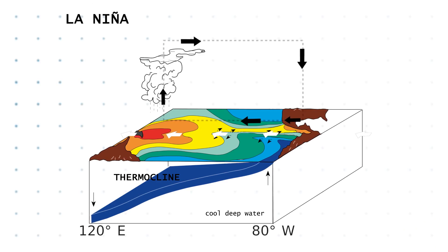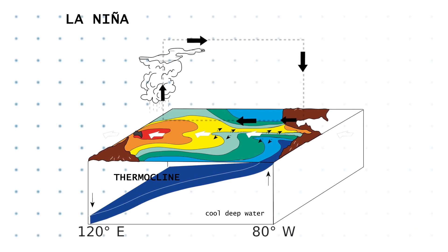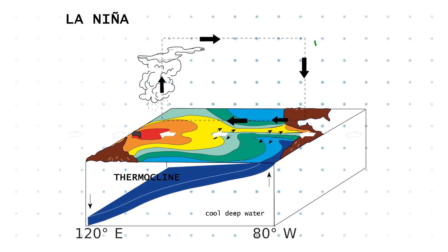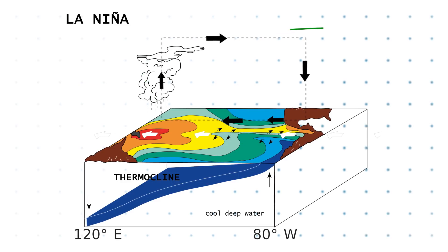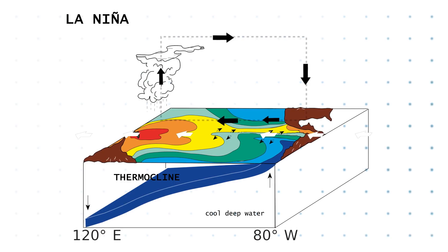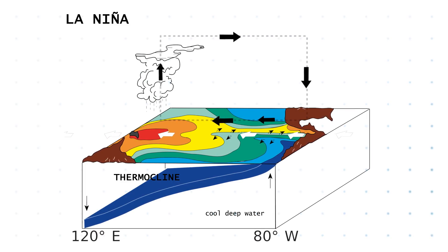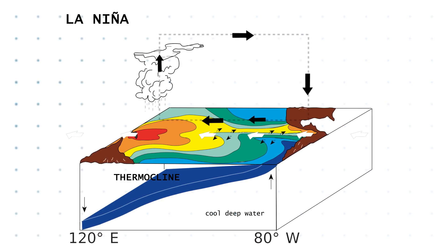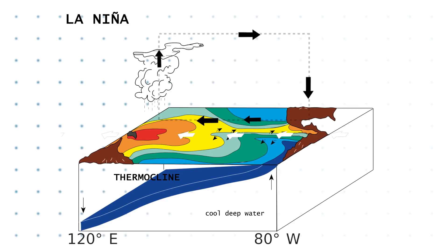In a La Niña event, the temperature of the eastern Pacific decreases compared to normal, strengthening the Walker circulation. So we know what's actually happening — but how did we figure this all out in the first place?